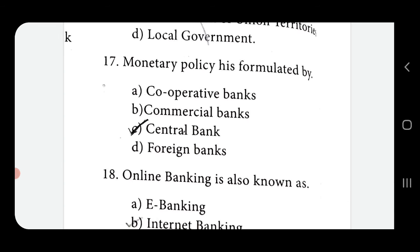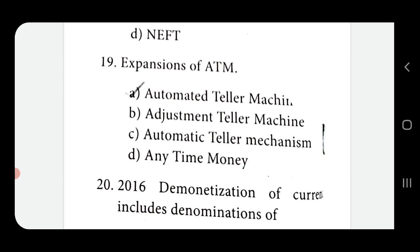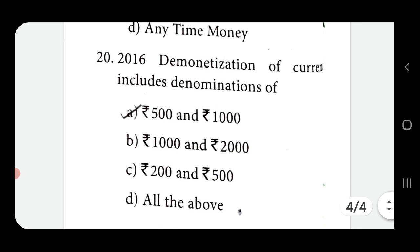Monetary policy is formulated by the Central Bank. Online banking is also known as Internet Banking. Expansion of ATM: Automated Teller Machine. Demonetization of currency includes denomination of rupees 500 and rupees 1000.